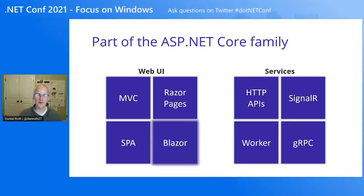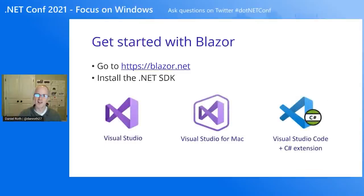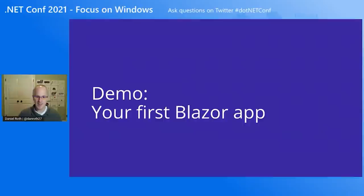ASP.NET Core comes with everything you need to build beautiful web UI and powerful backend services. The addition of Blazor to ASP.NET Core expands the reach of your .NET web apps to the client. There's no need to rewrite your existing ASP.NET Core apps — you can add Blazor components to your existing apps while preserving existing functionality. Getting started with Blazor is super easy. Just go to blazor.net and install the latest .NET SDK.